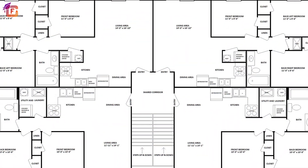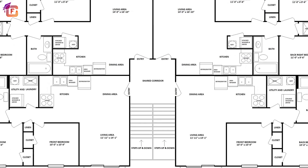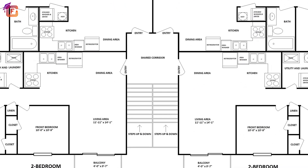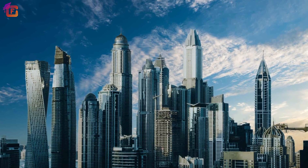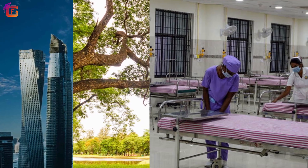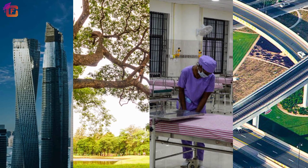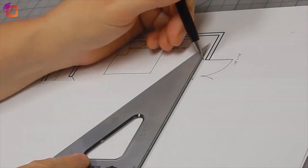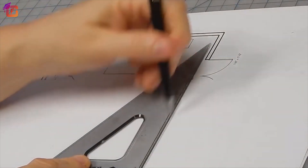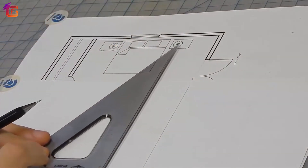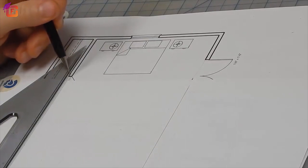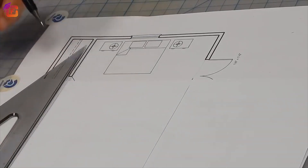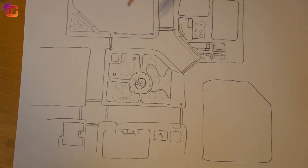Plans are a set of two-dimensional drawings used to describe a place or an object. They generally show the layout of buildings, parks, hospitals, roads, etc. Plans are accurate drawings that are made to scale and show correct directions. They can also show the length and breadth of an area.